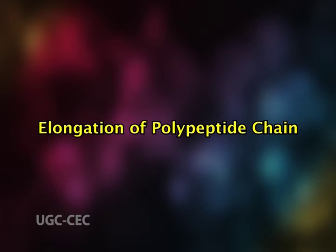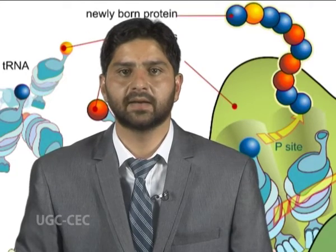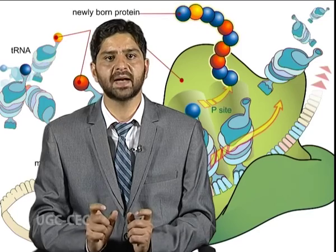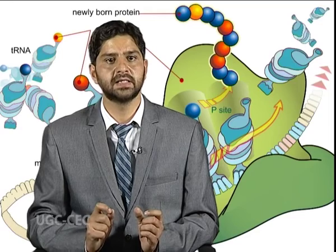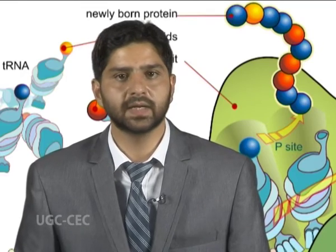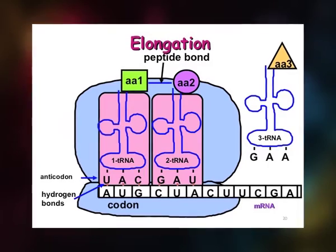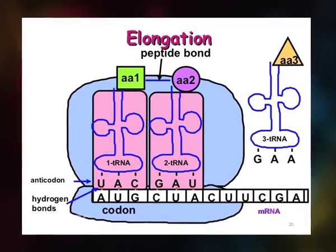Number five: elongation of polypeptide chain. A charged tRNA arrives at the A site, reading its codon on the mRNA. The amino acid of the tRNA at the P site is transferred to the amino acid of the tRNA at the A site. Amino acids are joined by a peptide bond, and tRNA is discharged from the P site. The peptide chain-carrying tRNA is translocated to the P site, making the A site free to receive another charged tRNA. Three elongation factors — EF-Tu, EF-Ts, and EF-G — assist in elongation of the polypeptide chain, and the process is also catalyzed by the enzyme peptidyl transferase located on the ribosome.